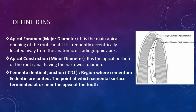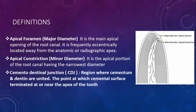The major diameter, or apical foramen, is the main apical opening of the root canal. It is frequently eccentrically located away from the anatomic or radiographic apex. The apical constriction, or minor diameter, is the apical portion of the root canal having the narrowest dimension.